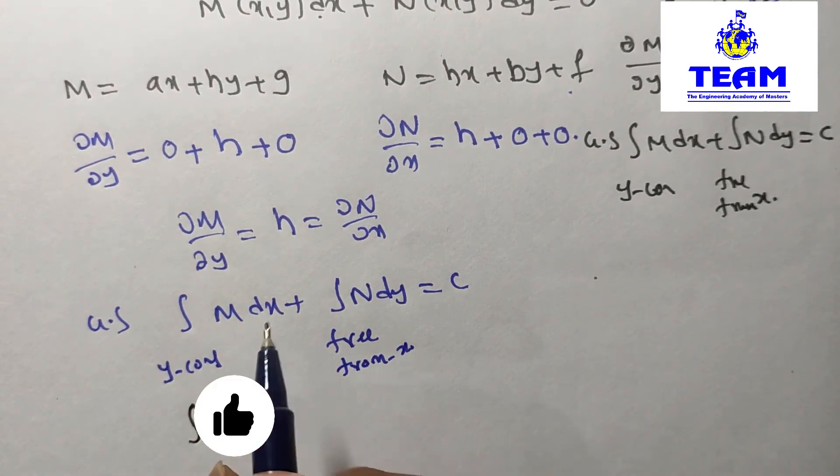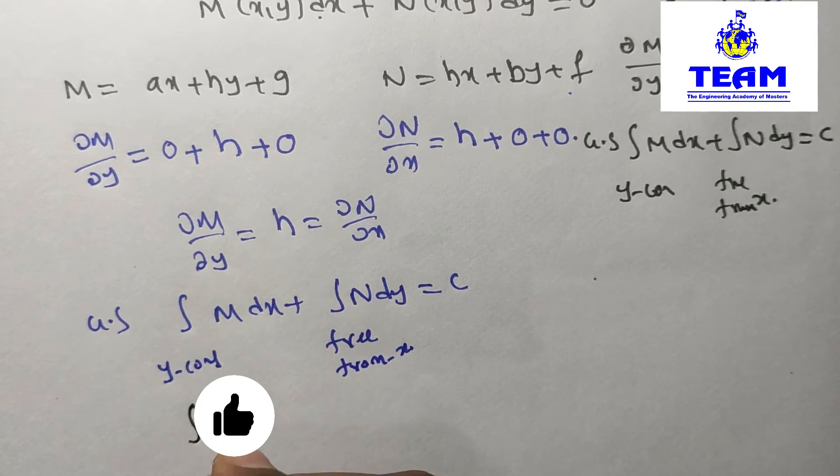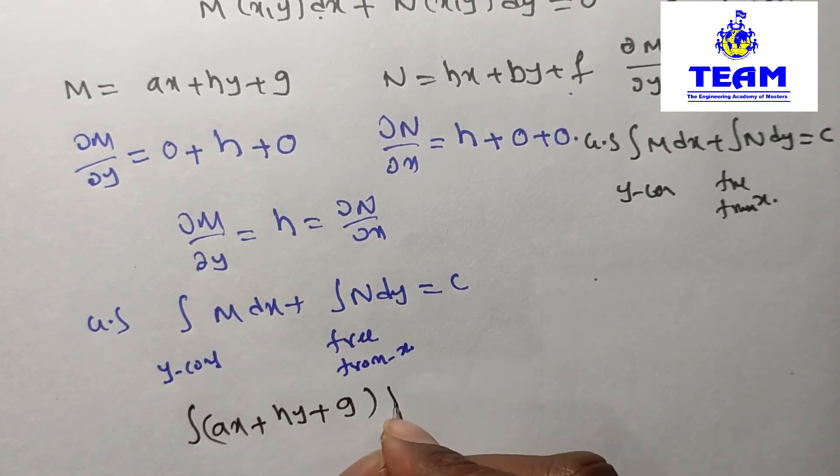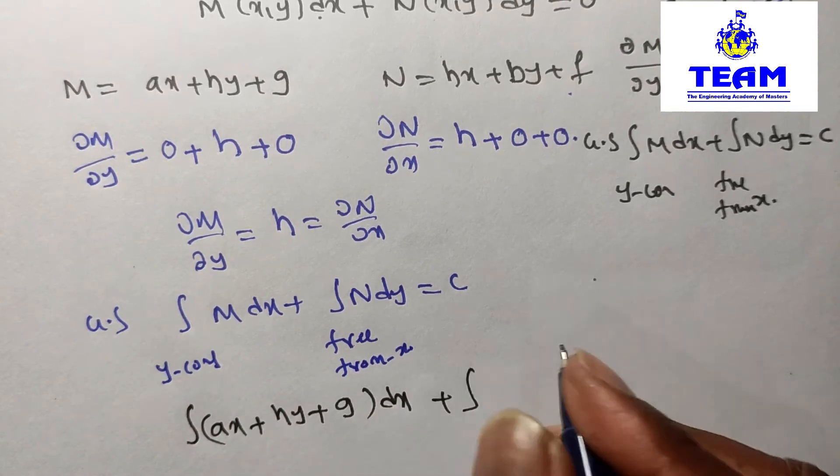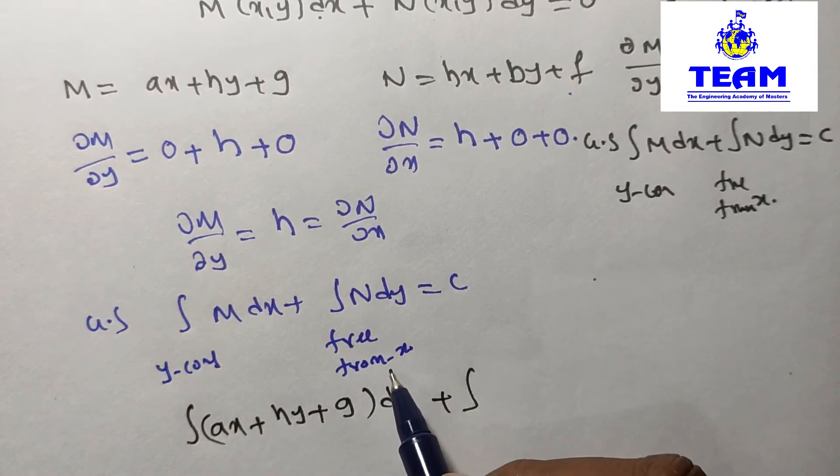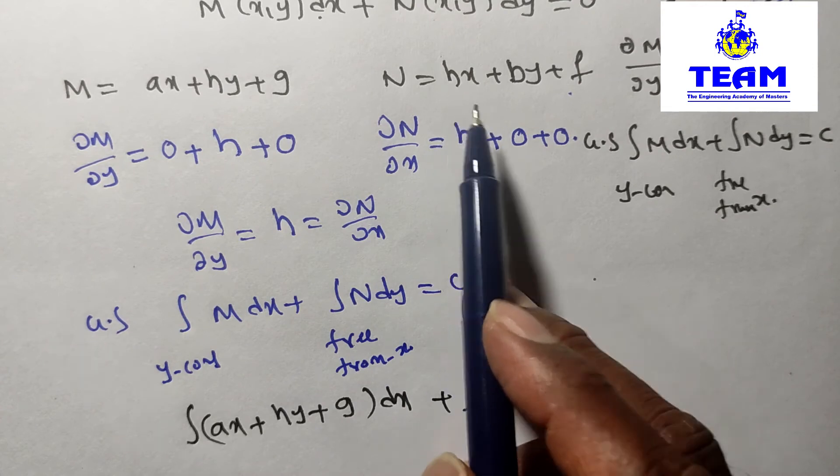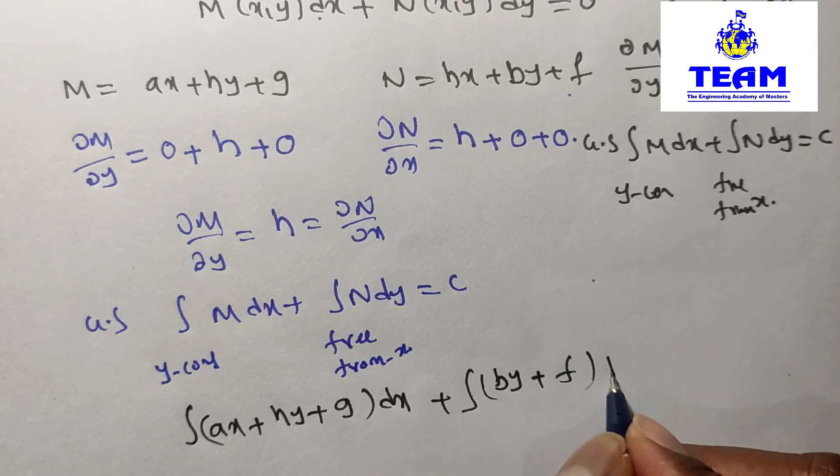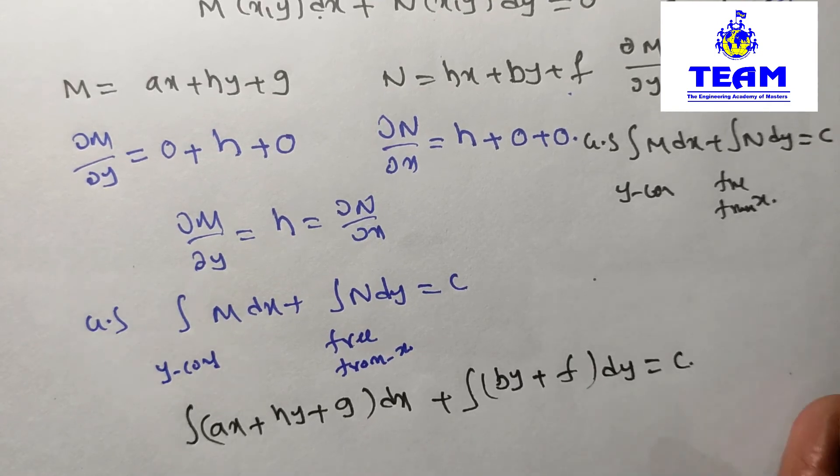Now integral of M - what is M? (ax + hy + g)dx plus integral of N. You should not take the x term in N. So here hx, don't take this term. Remaining terms: (by + f)dy equals C.